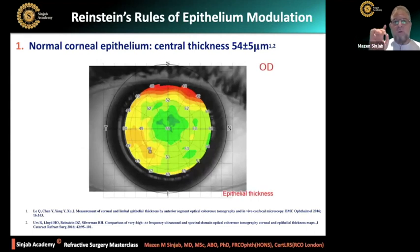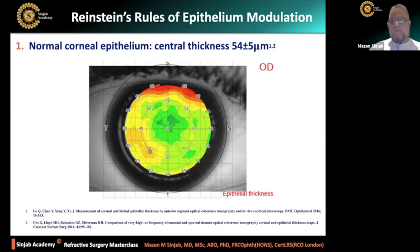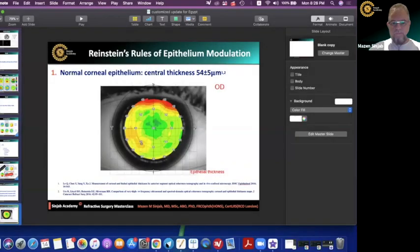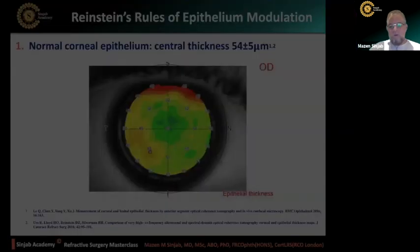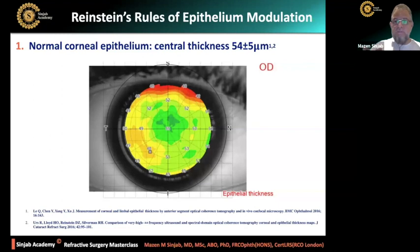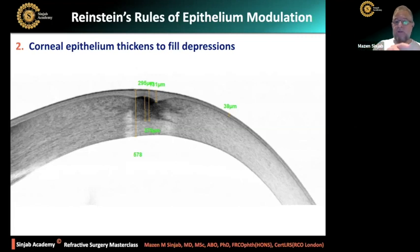Before I start, I want to show you Reinstein's rule of epithelium modulation, because it has an effect on the decision. The normal corneal epithelium — the central thickness is usually 54 microns. The normal corneal epithelium is homogeneous, and the central corneal thickness is around 54 microns. The second rule is that corneal epithelium thickens to fill depressions.